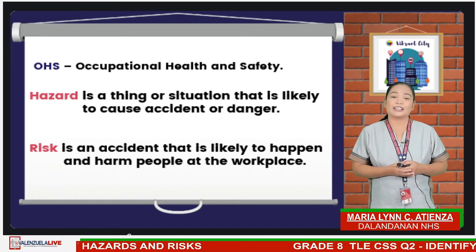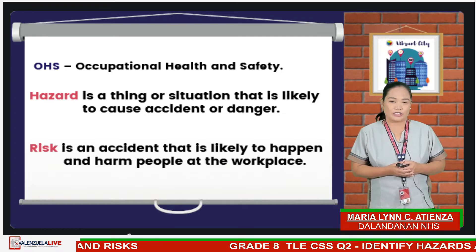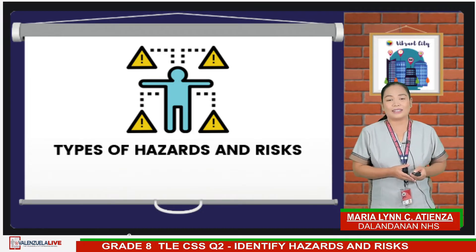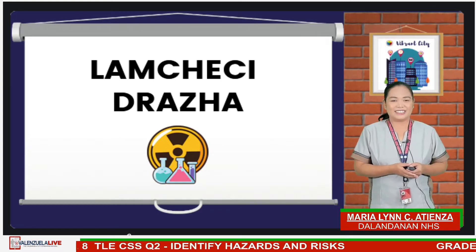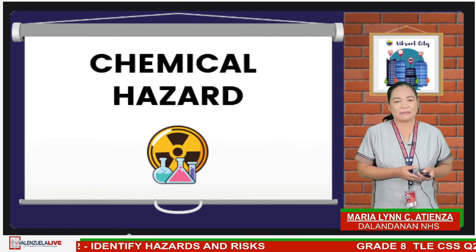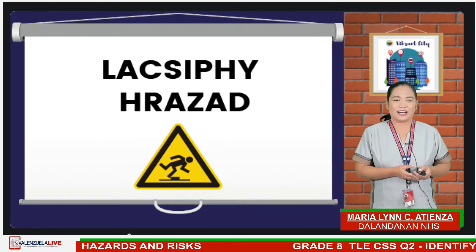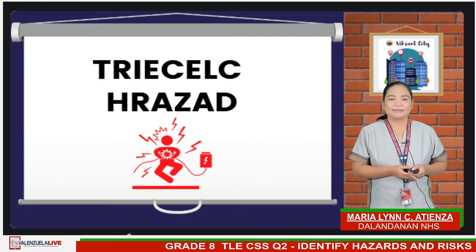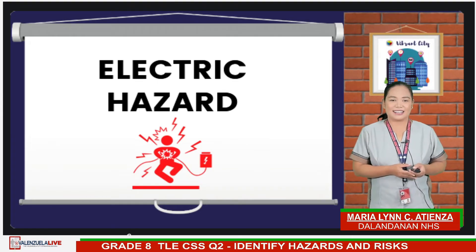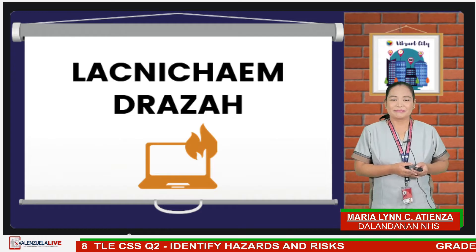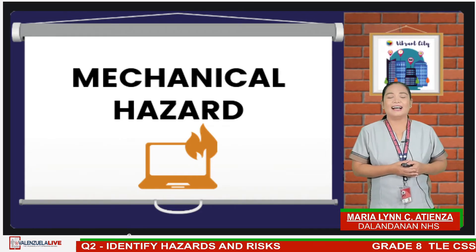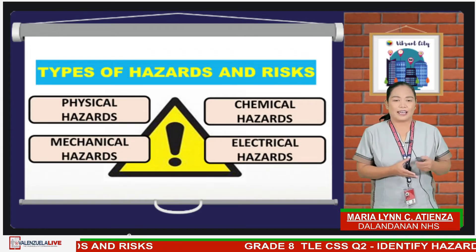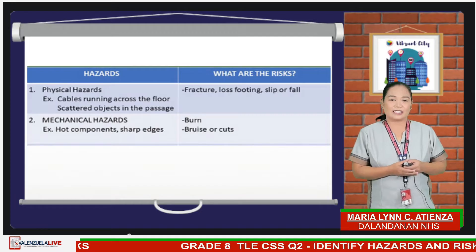Health and safety procedures are the responsibility of all persons in the computer and technology industries. There are different types of hazards. Let's decode some jumbled letters to find out what those are. The first one is chemical hazard. There are four types: physical hazards, mechanical hazards, chemical hazards, and electrical hazards.